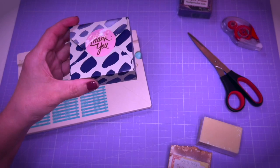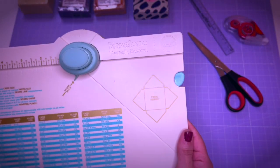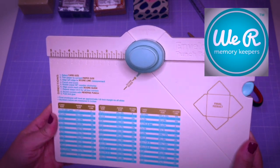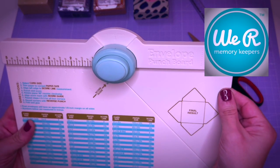The star of the show today is this tool called the Envelope Punch Board by We Are Memory Keepers that can also make boxes and not only envelopes.